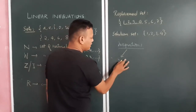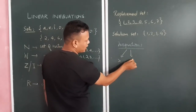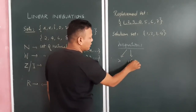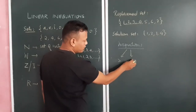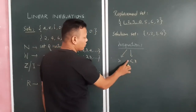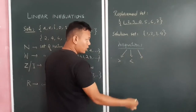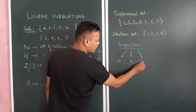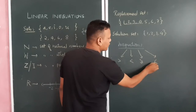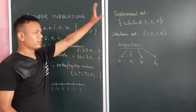Next is greater than or equal to (≥), which is the greater than sign with an equal to sign added below it. Similarly, we have less than or equal to (≤), which is the less than sign with an equal to below it. These are the four different notations we need to understand for inequations.